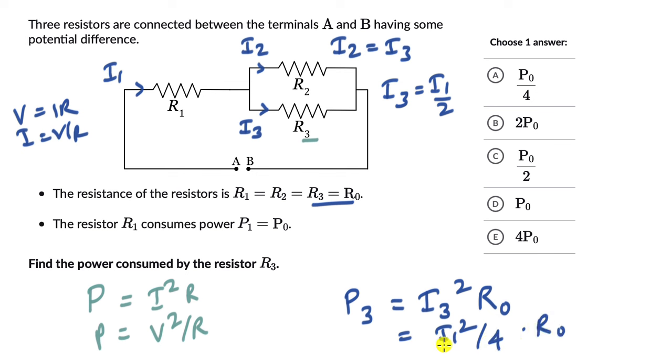Now if we figure out I1 we can try to express P3 in terms of P0. We know that resistor R1 consumes power P1 which is equal to P0. So this is equal to I1 square R0 and I1 square can be written as P0 by R0.